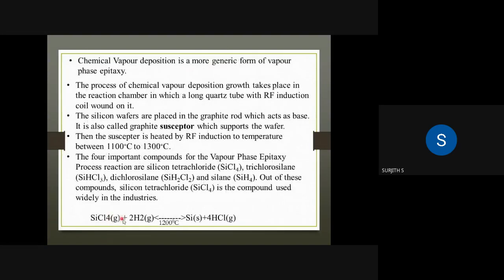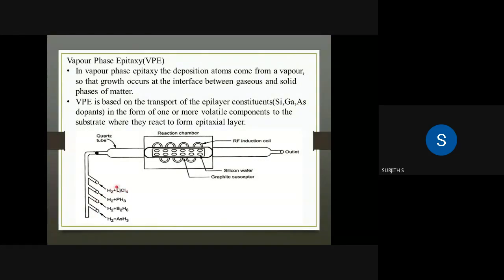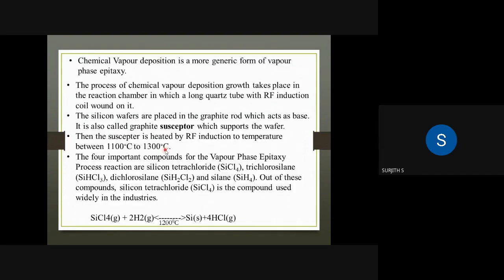SiCl₄ is the gas and hydrogen. With energy, these two gases can react at 1200 degrees centigrade. H₂ + SiCl₄ reacts to give solid silicon plus 4HCl (hydrochloric acid).